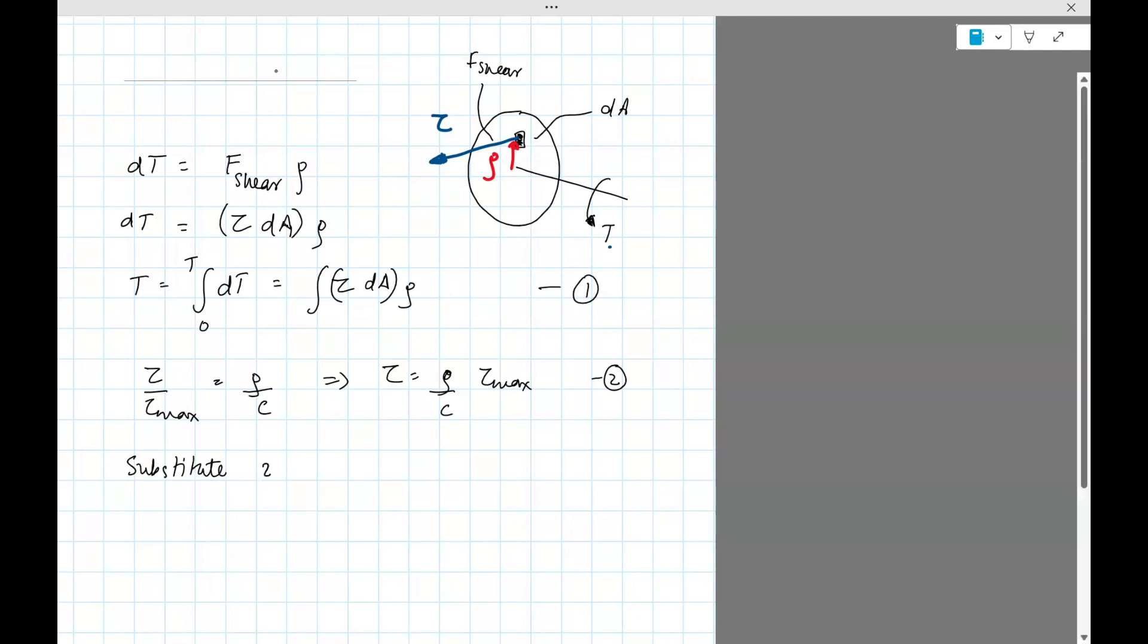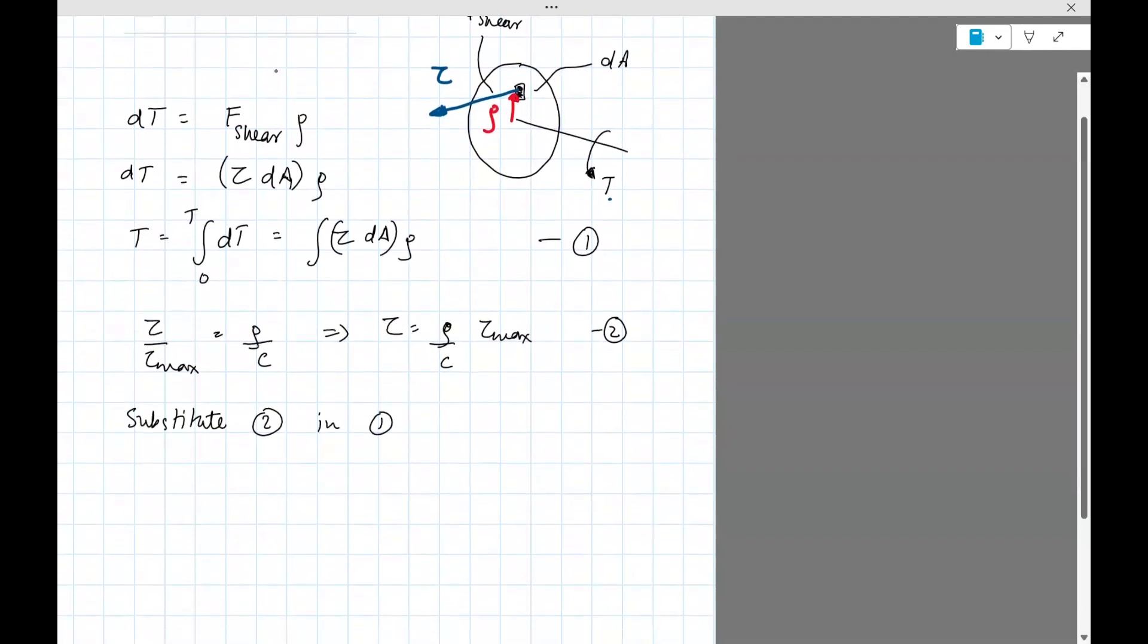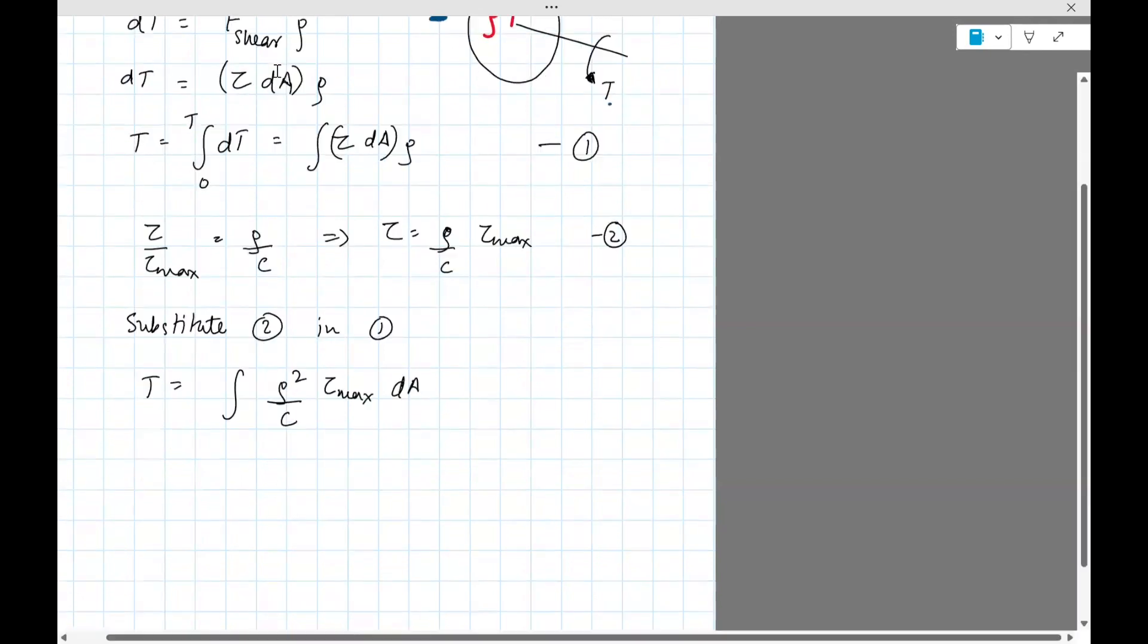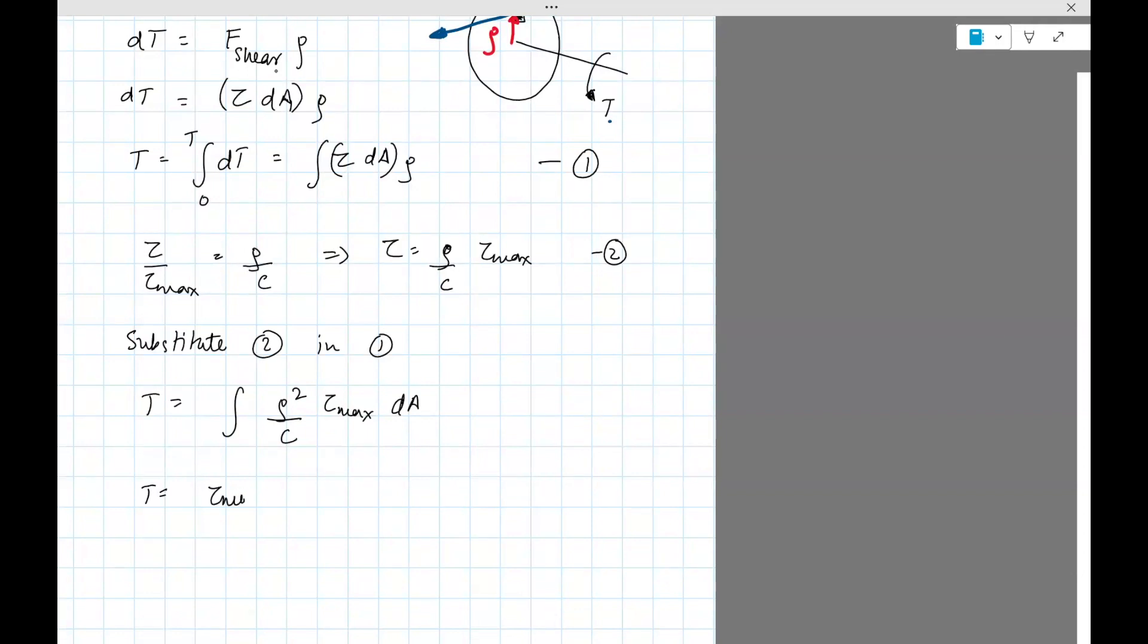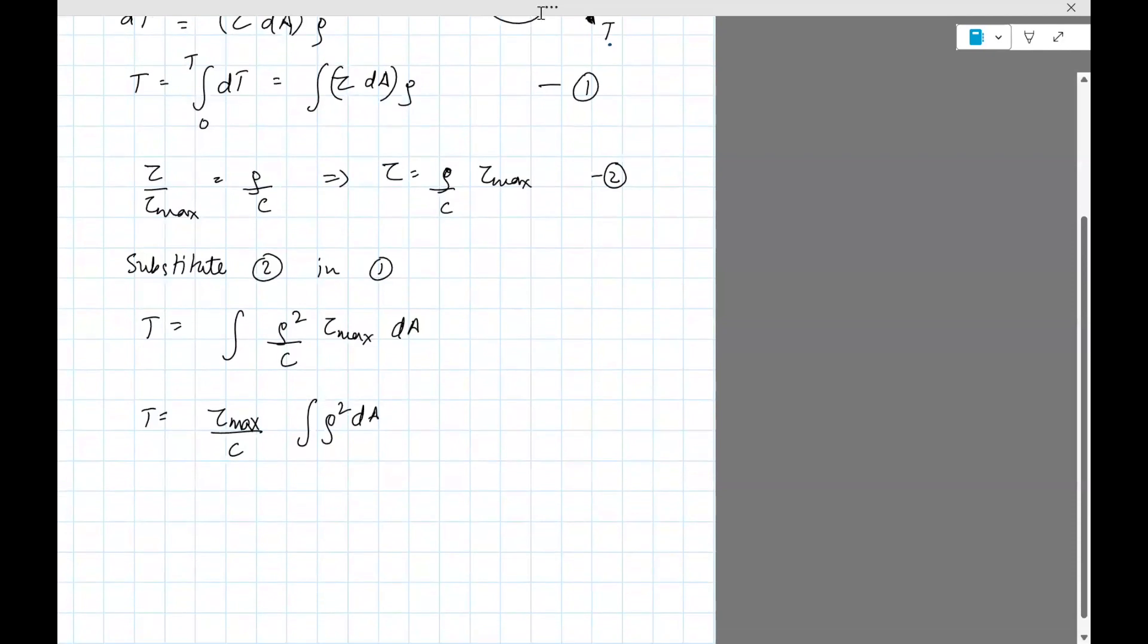So we substitute tau in. Yeah, T equals rho divided by C, rho squared, tau max dA. Yeah, I'm going to pull out the constant terms. Tau max is constant. C is constant. So we're left with rho squared dA. Yes, this rho squared dA is something which is a property of the geometry of the material. It's known as the polar moment of inertia, commonly abbreviated as J.